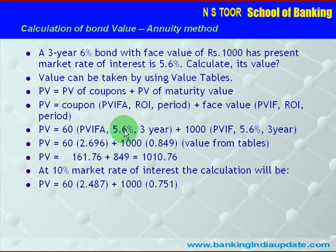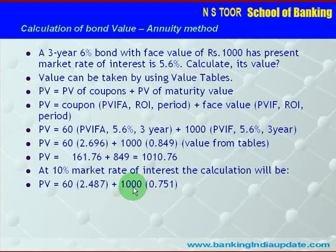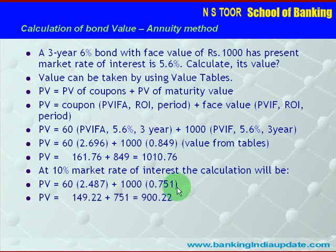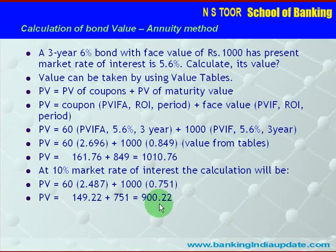When we use the annuity factor at 10% for 3 years, we get the corresponding factor, and for Rs. 1000 discounted at 10% for 3 years we get the factor 0.751. The calculation gives us Rs. 149.22 plus Rs. 751, so the total present value comes to Rs. 900.22 — which is less than the face value.